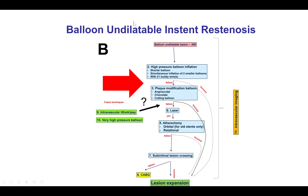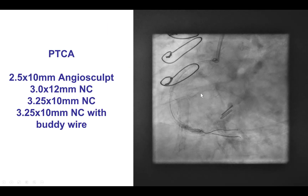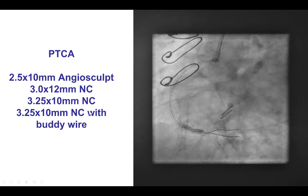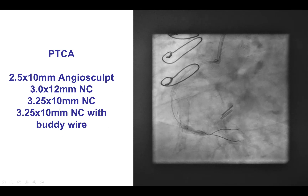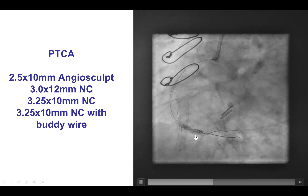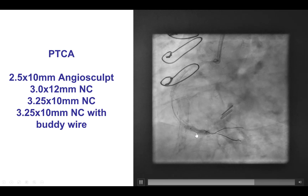How to treat a balloon undilatable in-stent lesion? The first step is to use high-pressure balloons and plaque modification balloons. This is exactly what we did — several non-compliant balloons. We used the AngioSculpt as well as non-compliant balloons with the buddy wire. We can see the waist in the balloon.